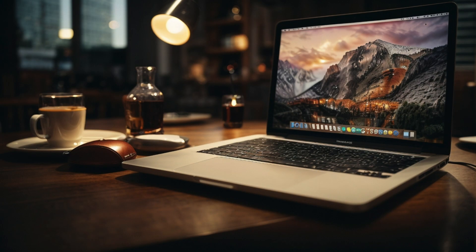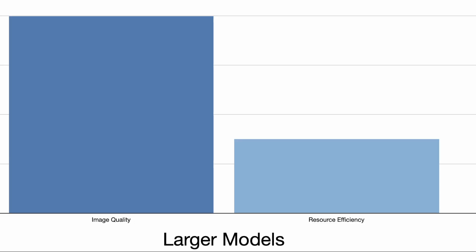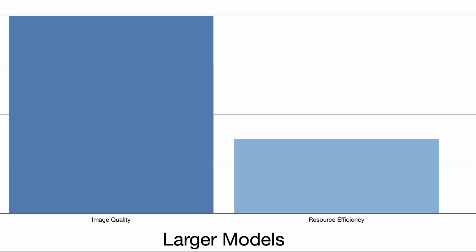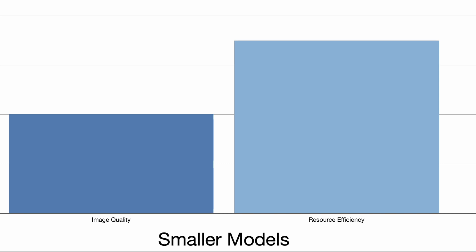The model's size impacts both the speed and image quality. Since you must download the models locally, it will take up space on your Mac. Larger models generally yield higher quality images, but are slower and demand more memory and storage. Smaller models are quicker and resource-efficient, but might have lower resolution or more noise in the generated images.